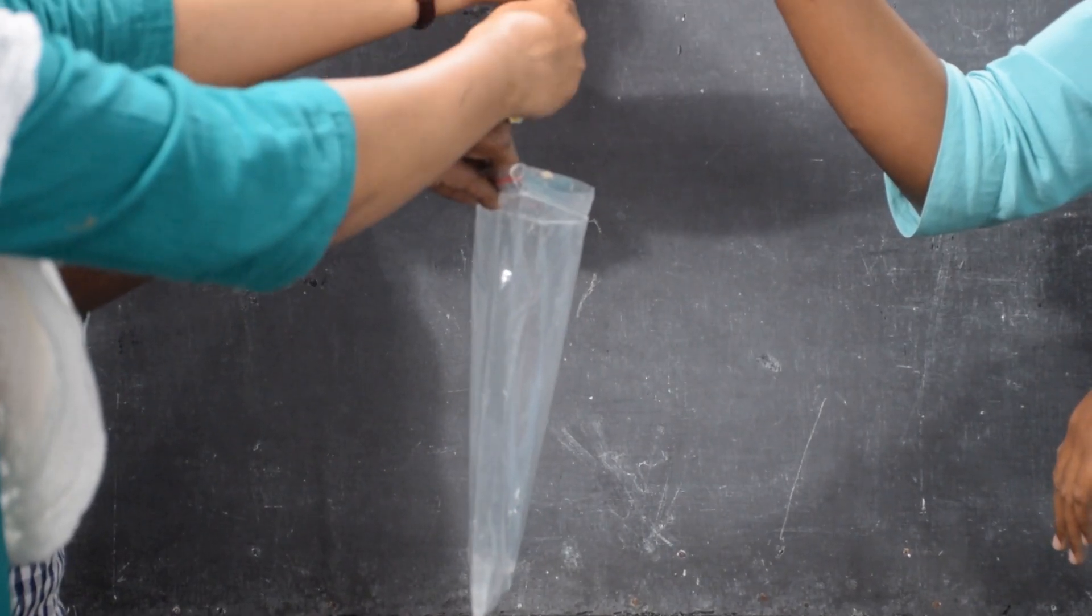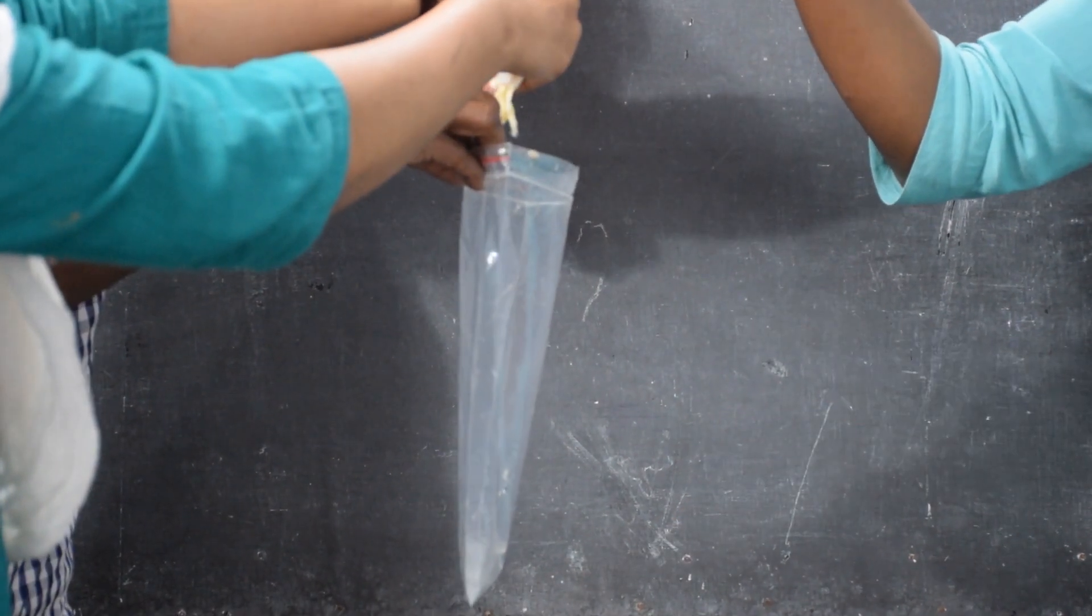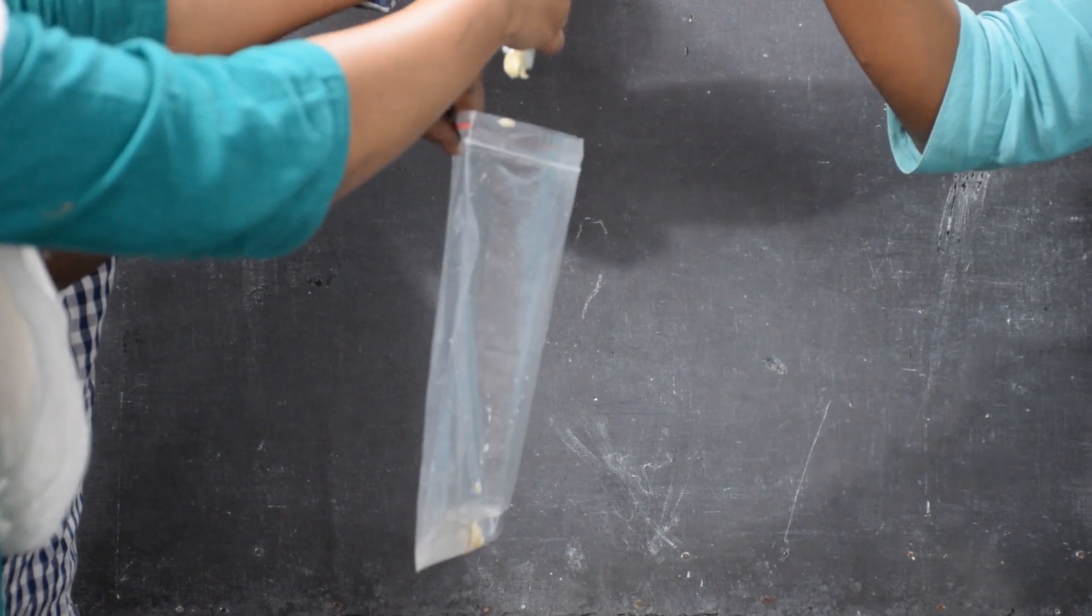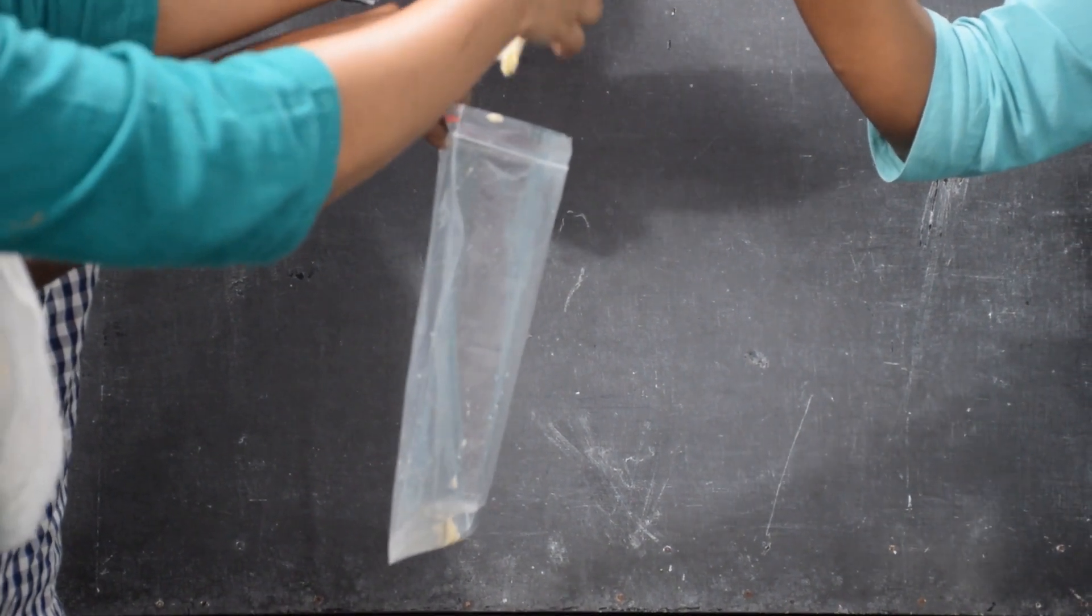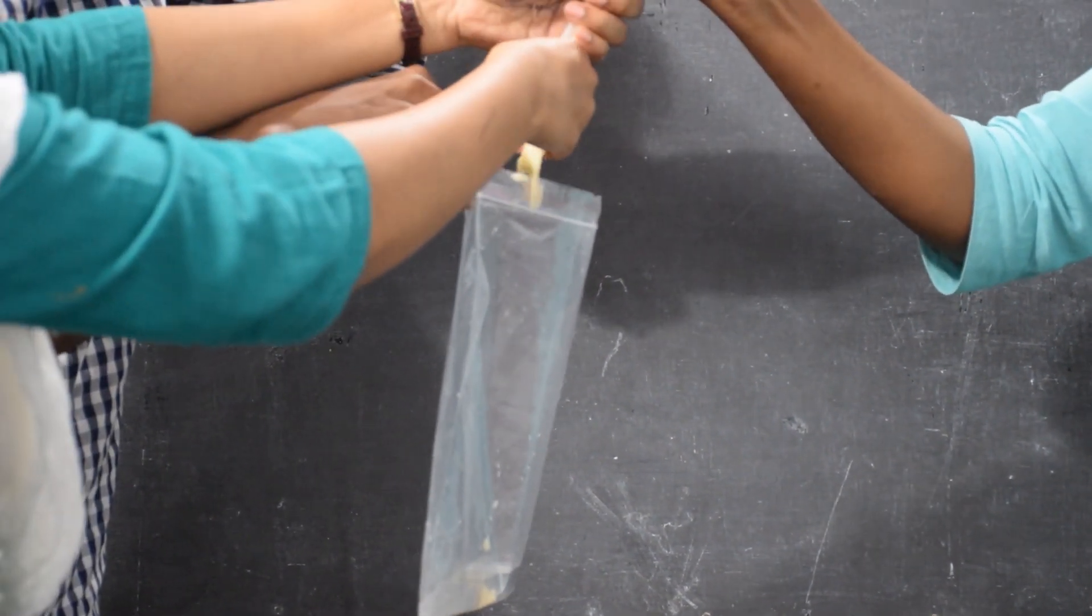From the food pipe, the food passes to the stomach. Here we have used a plastic bag as the stomach, and we have used some water instead of the digestive juices which are present in the stomach.